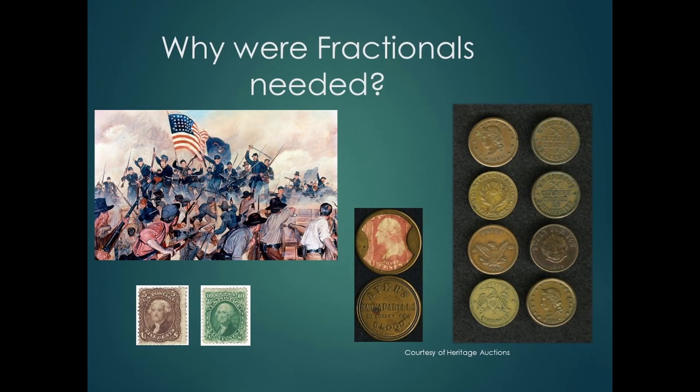Money supply was greatly affected by the Civil War. After the start of the war, the metal value in coins increased to be more than the face value. The coins were hoarded and eventually disappeared from circulation. People were not sure which way the war would go, and at that time paper money was not popular. Specie payment was suspended by New York City banks in December of 1861, meaning paper money could no longer be exchanged for gold or silver. Even copper coins became scarce.